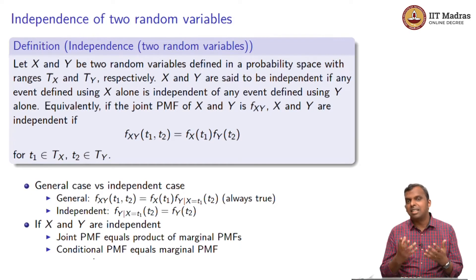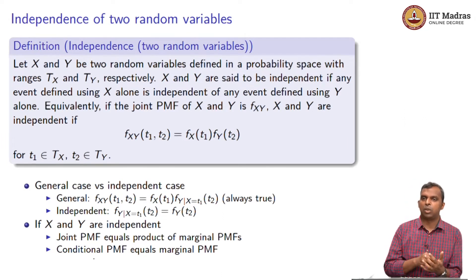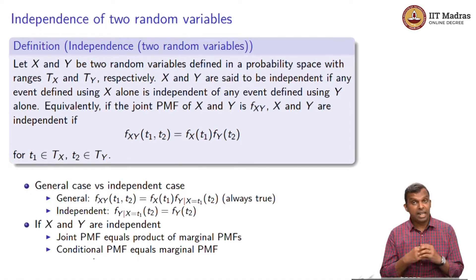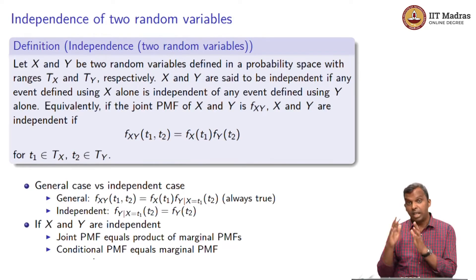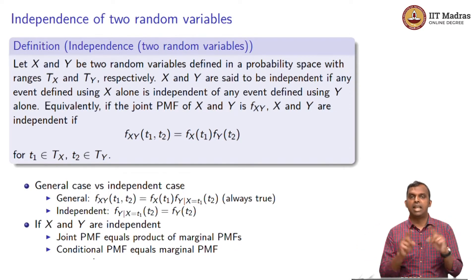It turns out you can extend this definition to random variables. Random variables take outcomes to numbers, and you can also define events using random variables — for example, X equals some value, or X lies in some range. We will say that random variables X and Y are independent if any event defined using X alone, and any event defined using Y alone, are always independent as events.